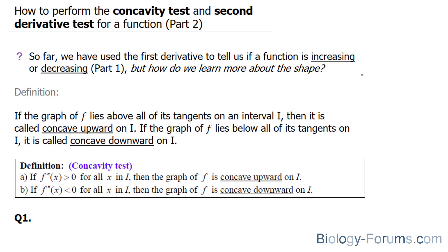It turns out that if the graph of f lies above all of its tangents on an interval I, then it is called concave upward on I. And if the graph of f lies below all of its tangents on I, it is called concave downward on I. The definition is stated right here.